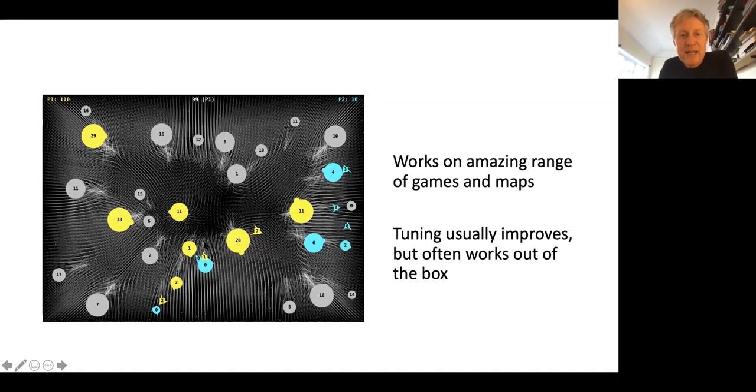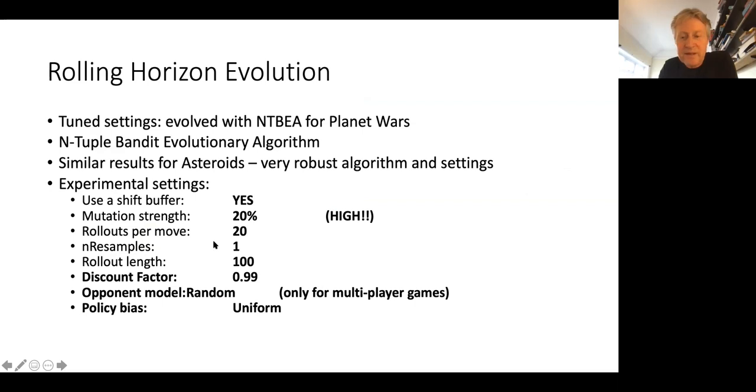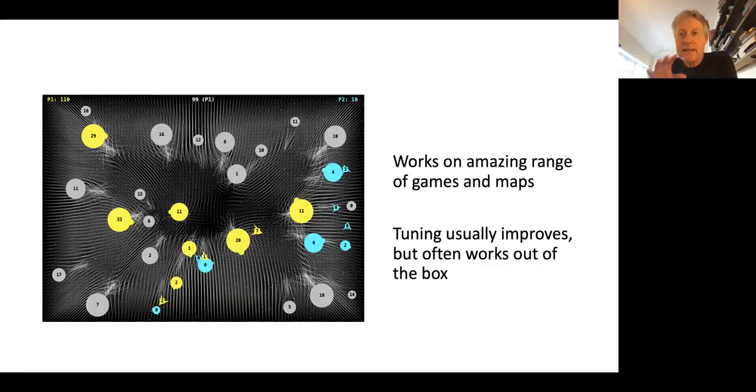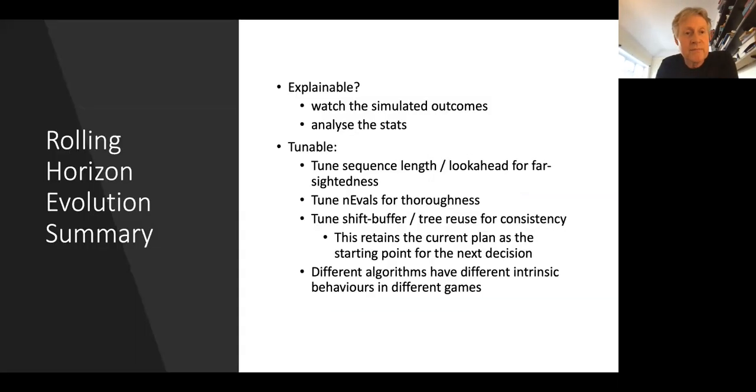The same algorithm - this is Planet Wars, in fact, that's what that one was based on. This is a two player game. Again, the same algorithm with very little tuning, perhaps even with no tuning, it just works straight out of the box with maps of any size. For game AI, you get amazing generalization. The summary of the rolling horizon evolutionary approach - this is a relatively explainable form of AI because to explain the actions, you can watch the simulated outcome and analyze the stats. It's tunable. You can tune the sequence length for the short-sightedness or long-sightedness of the agent, tune the n evals for the thoroughness, tune the shift buffer for the consistency. The different algorithms actually have different behaviors.